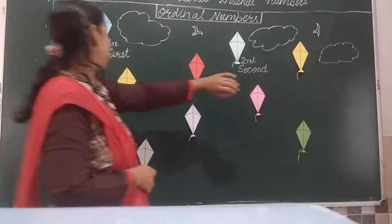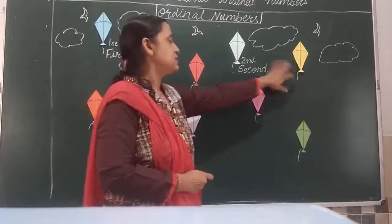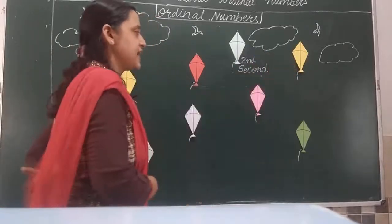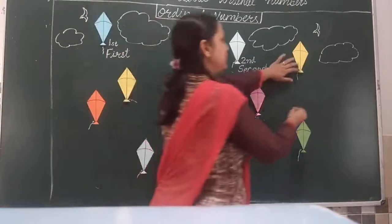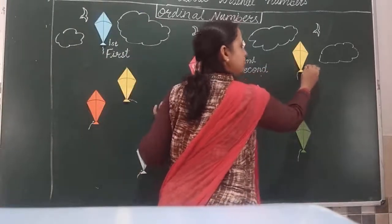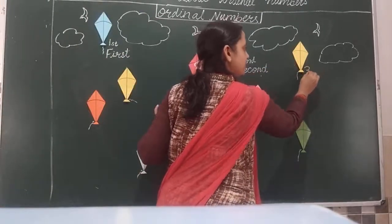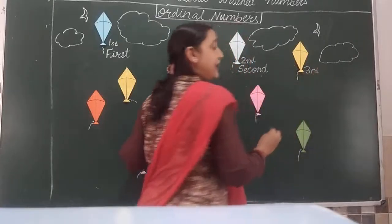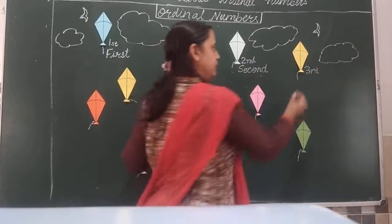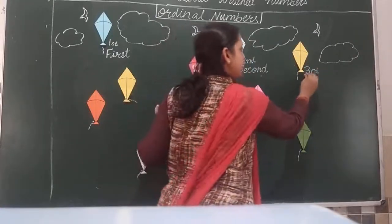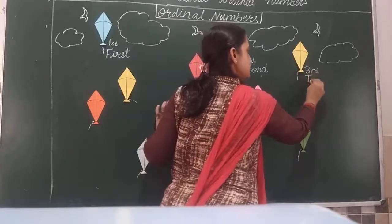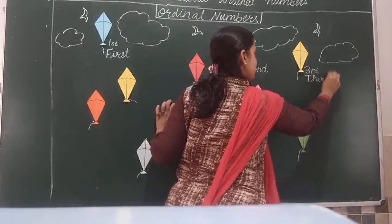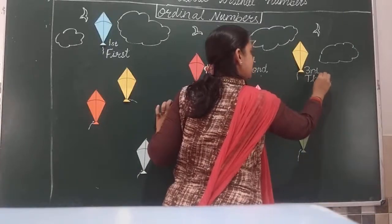So this kite just below it means it is at the third position. So we will write: three with small 'r' and 'd'. And then its spelling: T-H-I-R-D. Third.